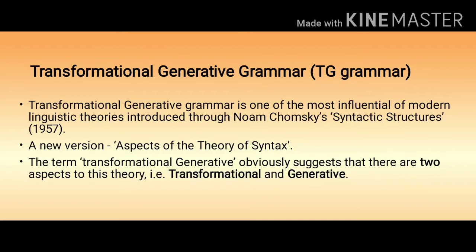Transformational Generative Grammar was introduced through Noam Chomsky's Syntactic Structures, published in the year 1957. Though the theory was revolutionary, some of its basic concepts were already there in existing theories. A new version of it was presented in his Aspects of the Theory of Syntax, where he questioned some of the basic principles of the structural approach.